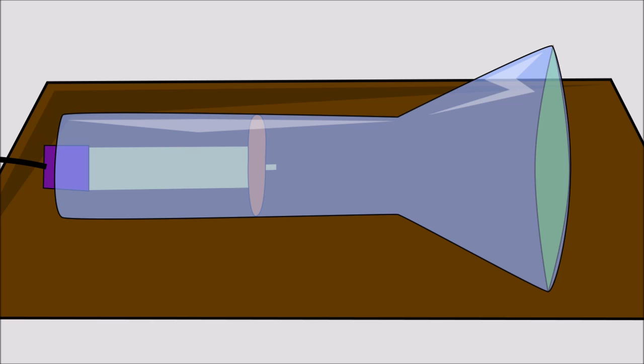A cathode ray tube is a glass vacuum tube that a beam of electrons is shot through, known as the cathode ray. The electrons are emitted from an electron gun.